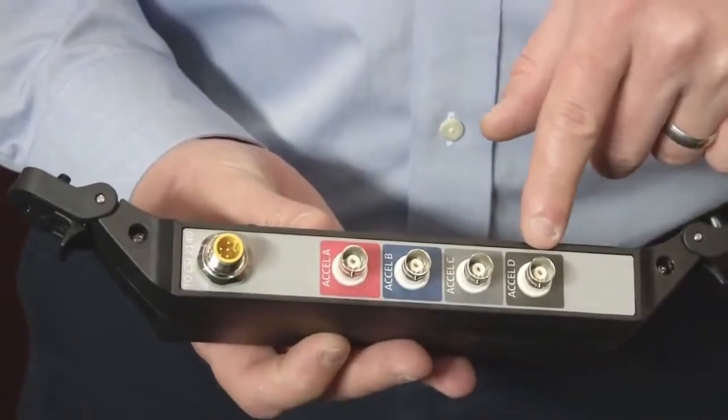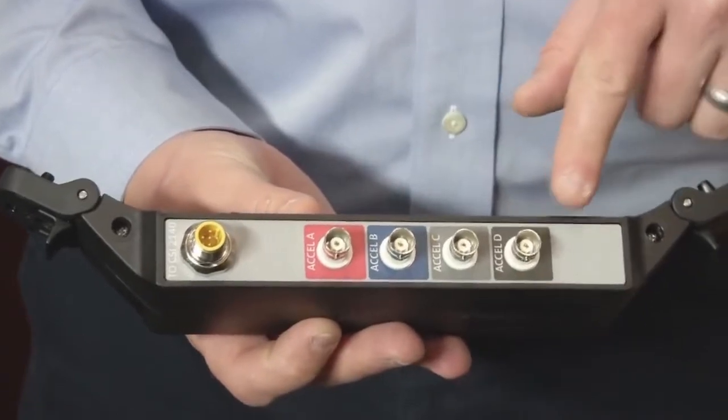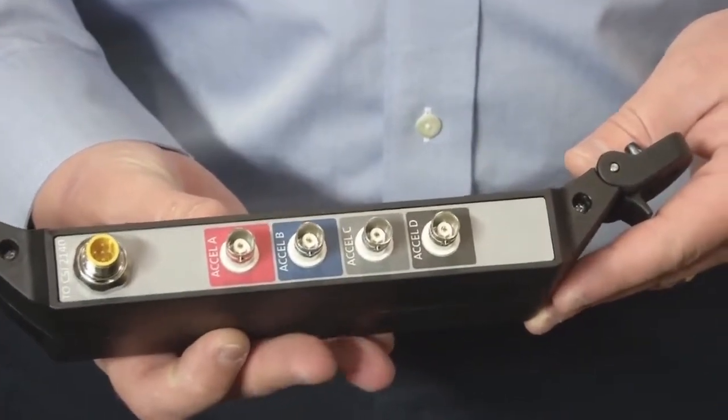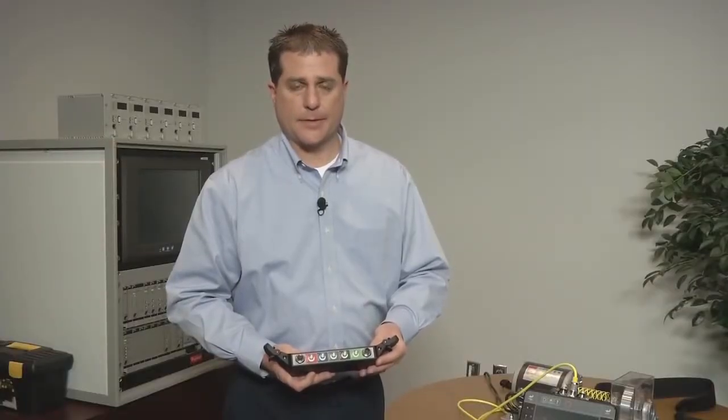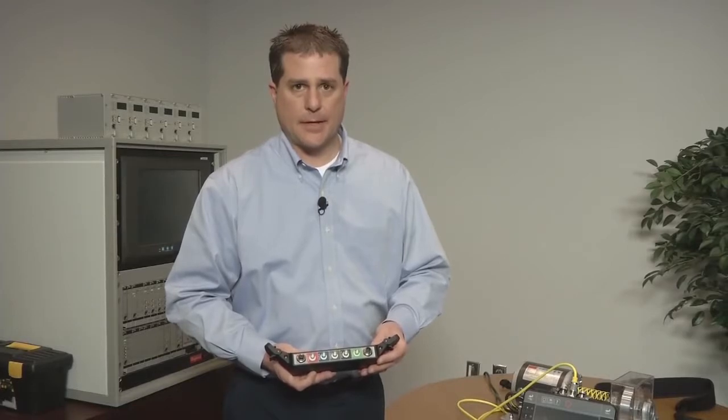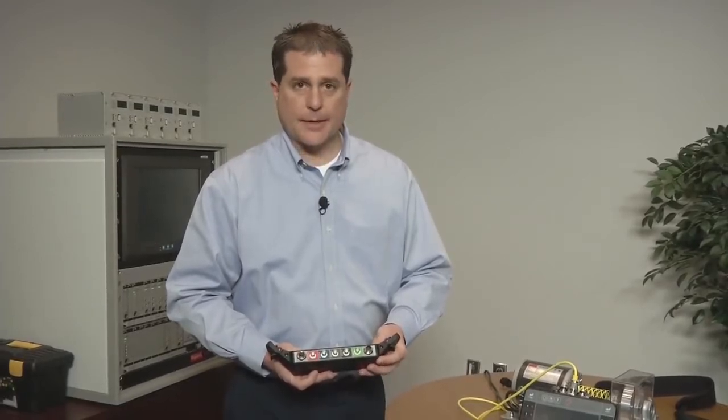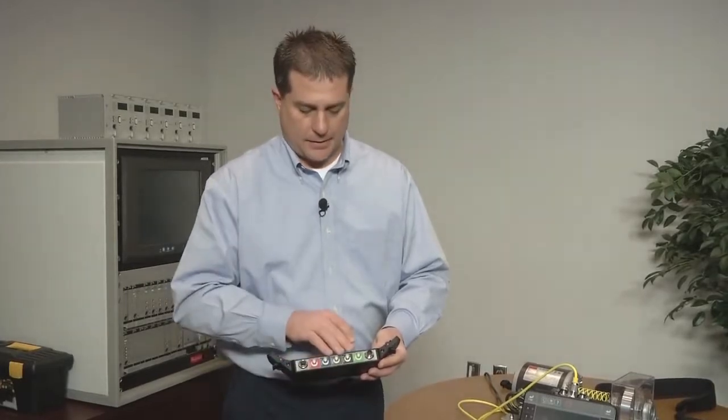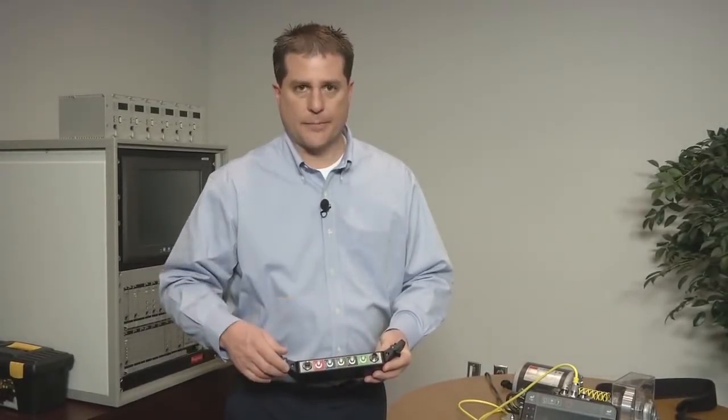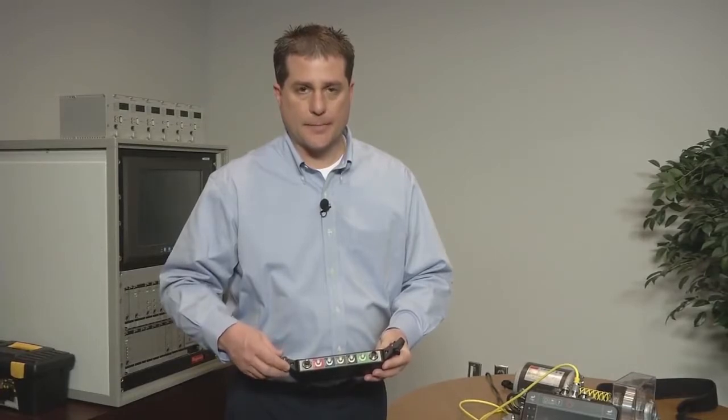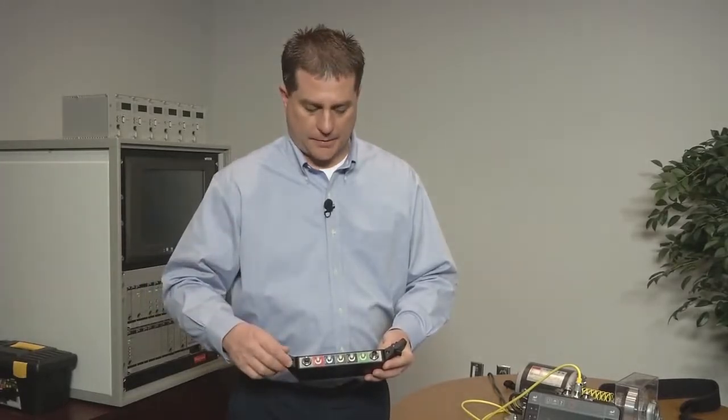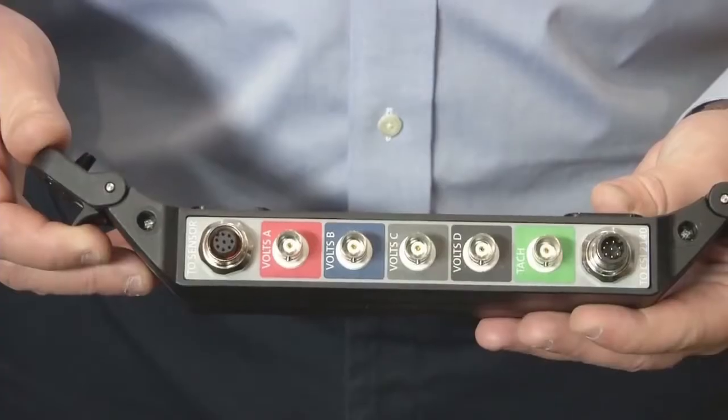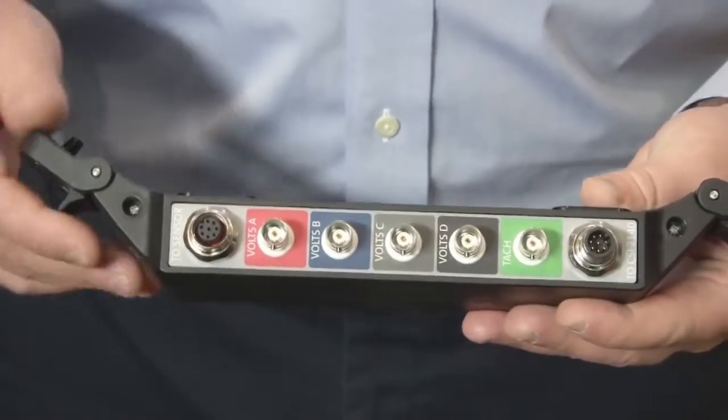And so one side is for monitoring rolling element bearings. This has four acceleration or accelerometer inputs for monitoring those rolling element bearings. If you're walking up and want to connect up to a protection panel from a CSI 6500 monitoring system to monitor sleeve bearing machines, now you've got on the other side of the unit, four channel volts inputs that you could monitor up to four sleeve bearings or put two of the connections 90 degrees apart and monitor two sleeve bearings and get live dual orbits on the CSI 2140.